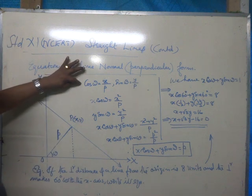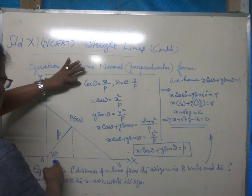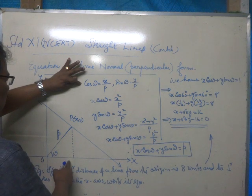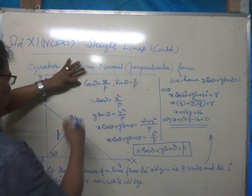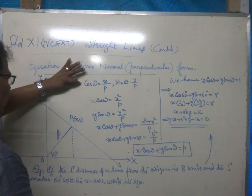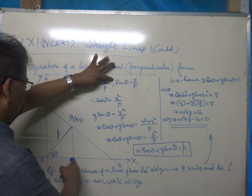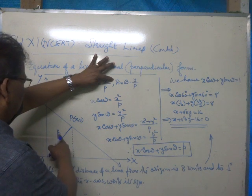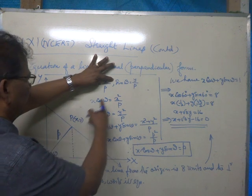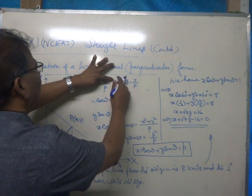Now, cos omega is equal to adjacent side x by hypotenuse p, x by p. Then sin omega is equal to opposite side, that is y, by hypotenuse, that is p. So sin omega is equal to y by p.